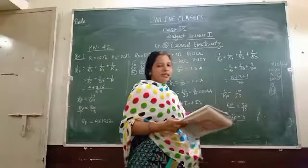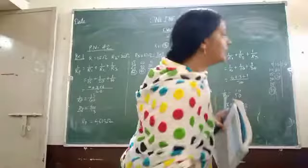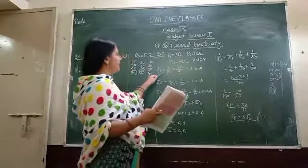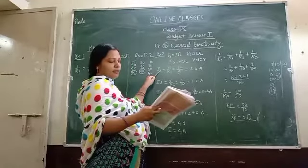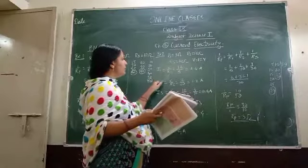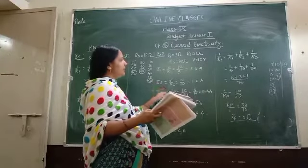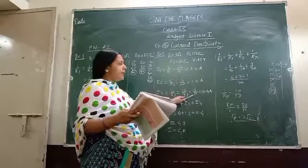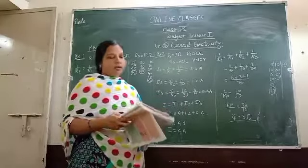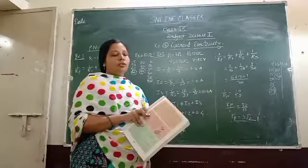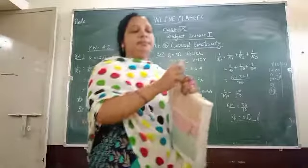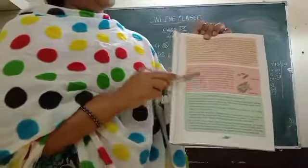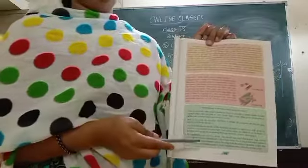So the effective resistance is 3 ohm. The total current flowing through the circuit is 4 ampere, and the effective resistance in the circuit is 3 ohm. For the 5 ohm, 10 ohm, and 30 ohm resistances, the individual currents are 2.4 ampere, 1.2 ampere, and 0.4 ampere respectively. This is the final answer. I hope these two examples were clear. The next portion is cancelled for this year and will be covered in the next video. Thank you.